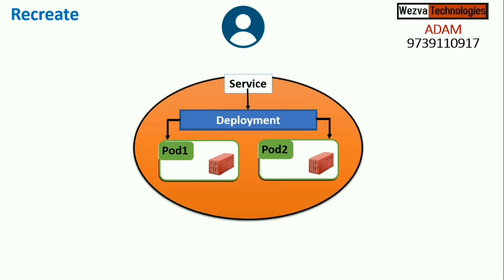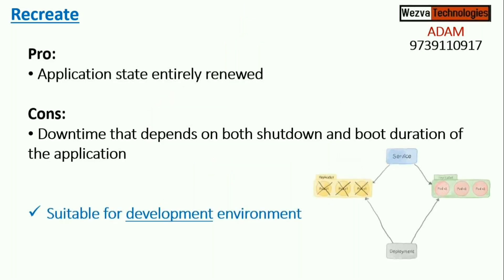After termination, Kubernetes will bring up two new pods from build 200. That is what we call recreate — however many replicas are running, it terminates them and creates new ones from the new image. The major advantage of this method is you get everything in one shot, which is why we also call it 'big bang.'